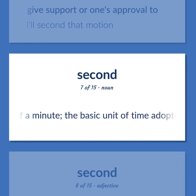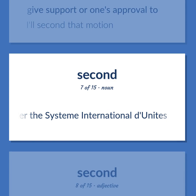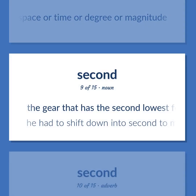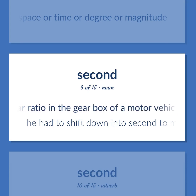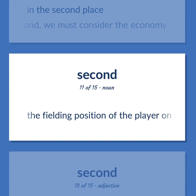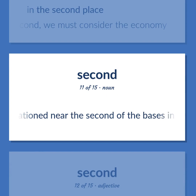1/60th of a minute — the basic unit of time. Coming next after the first in position in space, time, degree, or magnitude. The gear that has the second lowest forward gear ratio in the gearbox of a motor vehicle — "He had to shift down into second to make the hill." In the second place — "Second, we must consider the economy." The fielding position of the player on a baseball team stationed near the second of the bases in the infield.